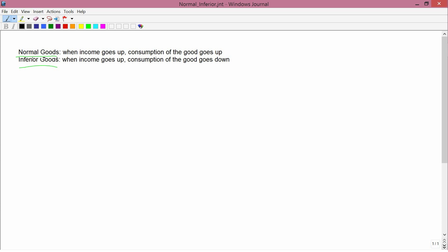You can flip these definitions around. The fundamental property of a normal good is that income and consumption go in the same direction. In other words, if income were to go down, consumption would go down. An inferior good's fundamental property is that income and consumption move in opposite directions. So if income goes down, consumption of the good would go up. Opposite directions, income and consumption, it's an inferior good. Same direction, it's a normal good.